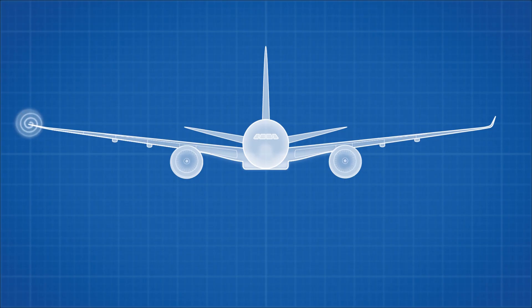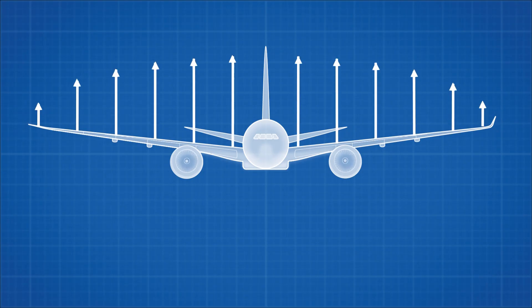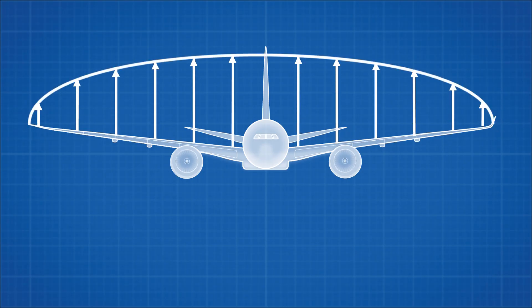Winglets reduce this airflow by reducing the pressure gradient at the tips of the wings, thus making the vortices much smaller. Their ultimate goal is to create a lift distribution across the wing in the shape of an ellipse, which minimizes the amount of air that wants to flow over the tips of the wing while maintaining maximum lift.